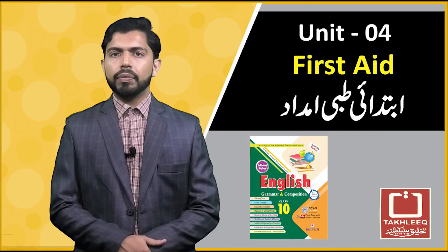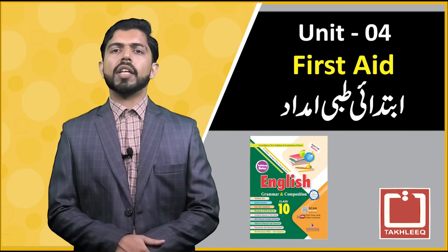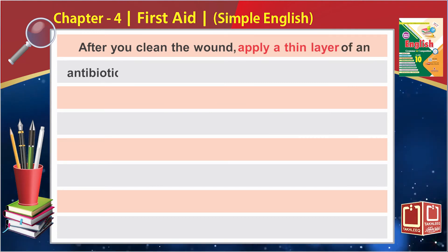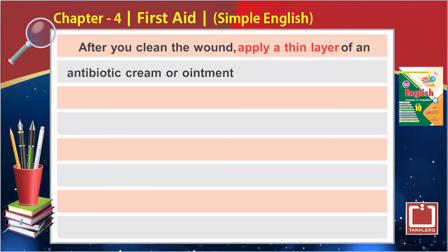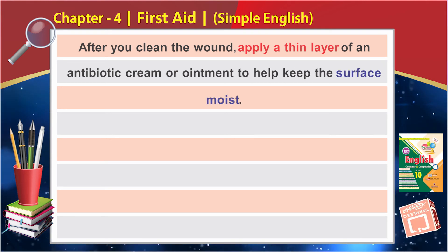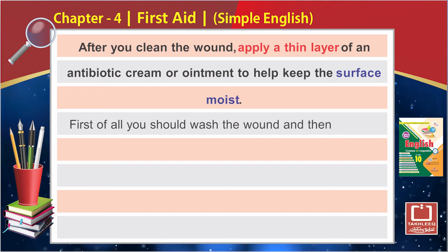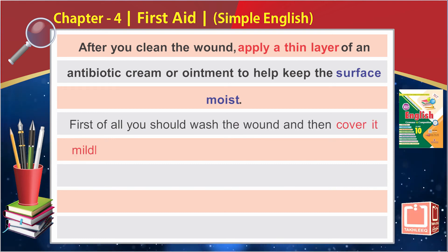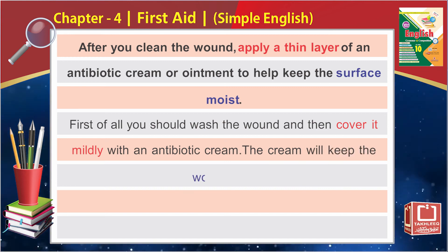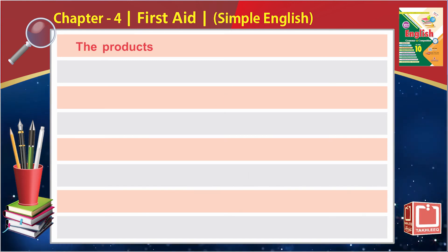Toh yeh thi is paragraph ki translation. Ab hum iski simple English ki taraf jate hain. Simple English: 'After you clean the wound, apply a thin layer of an antibiotic cream or ointment to help keep the surface moist.' Simple English hai: first of all you should wash the wound and then cover it mildly with an antibiotic cream. The cream will keep the wound soft.